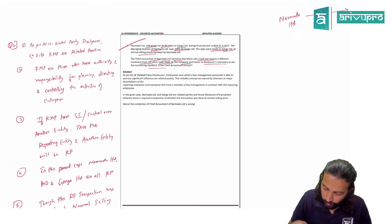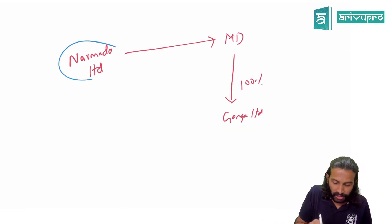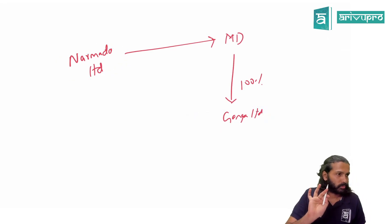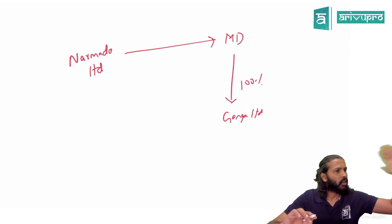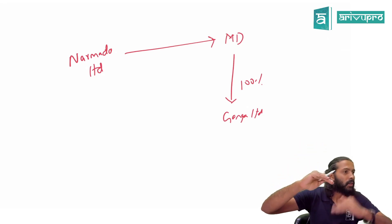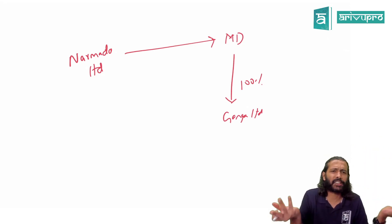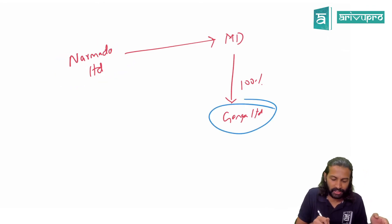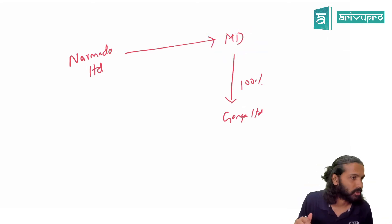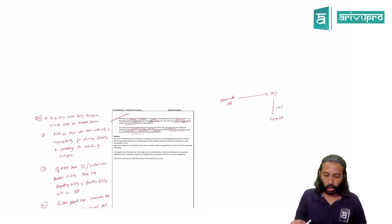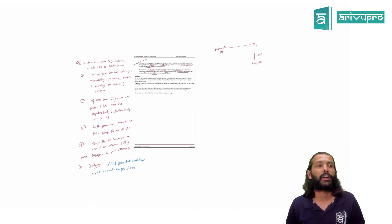Note that here, Narmada and Ganga's relationship is established through the MD — not through direct control by Narmada. So how are they related? Through the KMP. Since the transaction is happening between Narmada and Ganga, disclosure is necessary. With this, all the core questions related to AS 18 Related Party Disclosure are done.